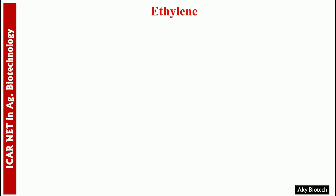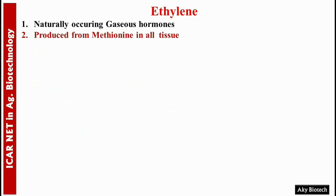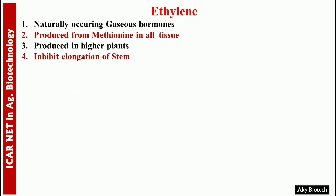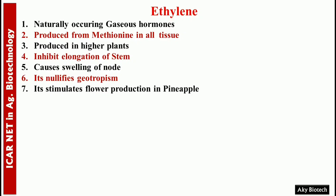Ethylene is also a very important part — many questions have been asked from this topic in previous examinations. Number one, it is a gaseous hormone, a naturally occurring gaseous hormone. Number two, it is produced from methionine in all tissues. Number three, it is produced in higher plants. Number four, it inhibits elongation of stem and causes swelling of nodes.